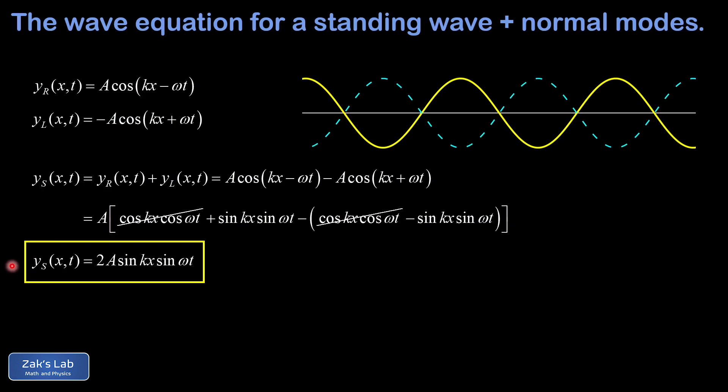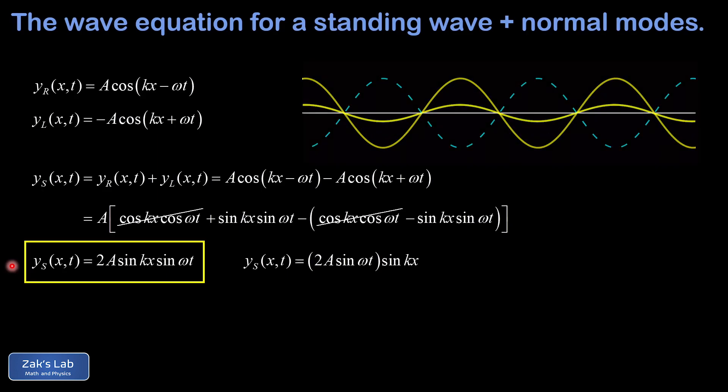Now it's useful to rearrange this expression with the time dependence put out in front, because now we can interpret this as an oscillating amplitude sitting in front of a fixed sine function sin(kx). So sin(kx) is just an ordinary sine wave in space, and then the 2A sin(ωt) out in front tells you we have an amplitude that's oscillating between 2A and negative 2A. So we have an ordinary sine function with its amplitude growing to 2A, it then shrinks to zero, it then goes to negative 2A so it flips upside down, and so on. So this form of the equation helps us understand what we're seeing in the animation of the standing wave.